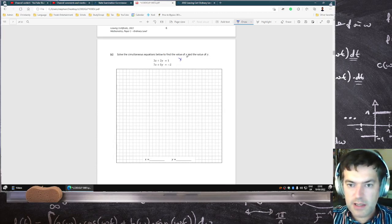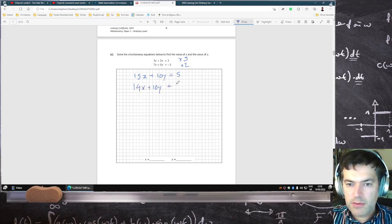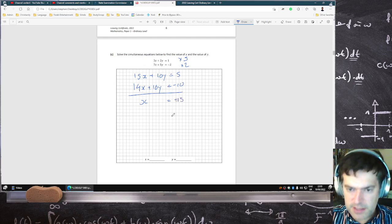Let's go with times 5 times 2. 15x plus 10y equals 5. 14x plus 10y equals minus 10. Subtracting, they leave me with x minus... 5 minus minus 10. So positive 15.